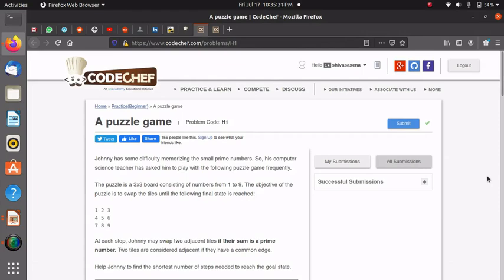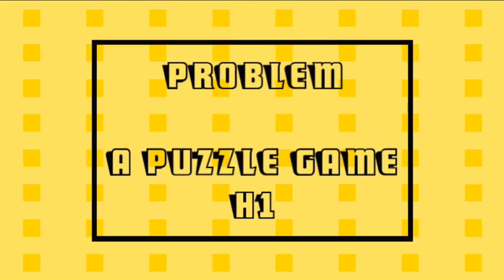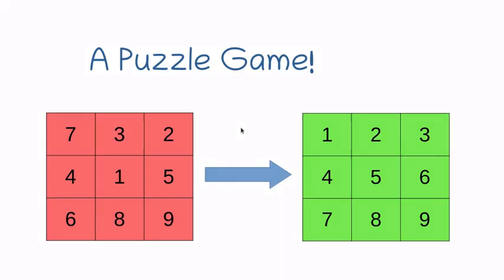It's really easy to understand this problem. You are given a 3 cross 3 matrix having digits 1 to 9 in the puzzle state, and you have to achieve the solution state.